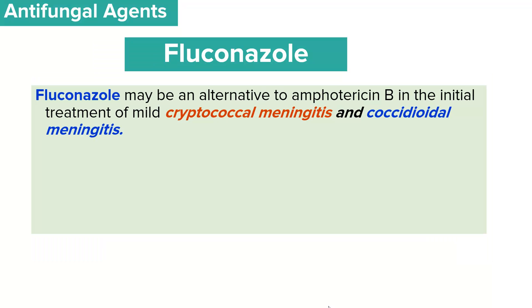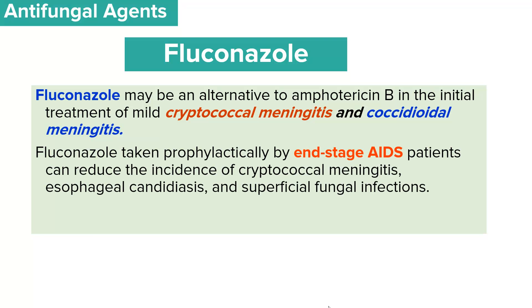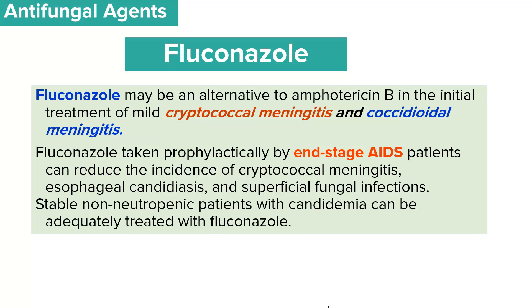Fluconazole may be an alternative to amphotericin B in the initial treatment of mild cryptococcal meningitis or coccidioidal meningitis. Fluconazole can also be taken prophylactically by end-stage HIV/AIDS patients and can reduce the incidence of developing cryptococcal meningitis, esophageal candidiasis, and superficial fungal infections, since these patients have immunosuppression and are at risk. Stable non-neutropenic patients with candidemia can also be adequately treated with fluconazole.